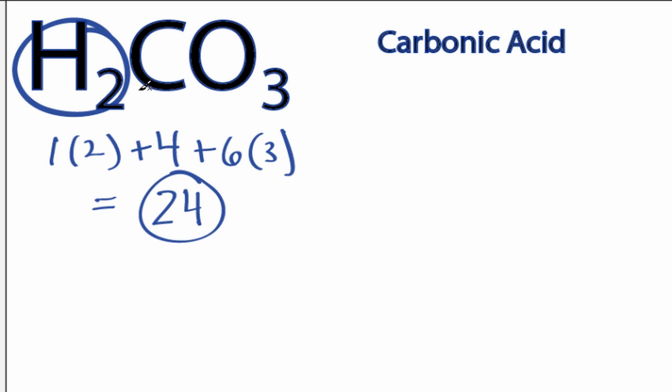Whenever you see hydrogens in front of a polyatomic ion, like CO3, NO3, or SO4, it's going to be an acid, and you're going to need to put those hydrogens attached to the outside oxygens.